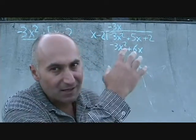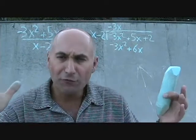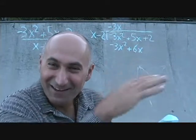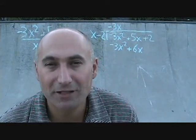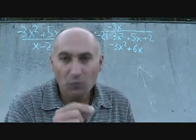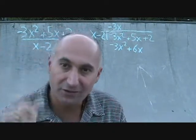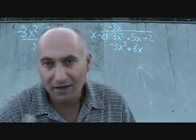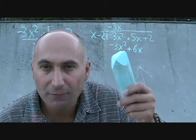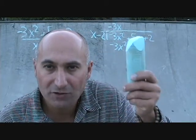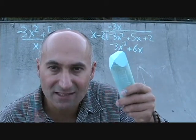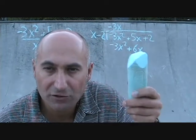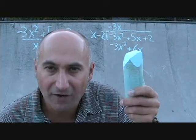For longer long division problems there are a lot of things to keep track of, and the last thing you want to worry about is a negative times a negative becoming a positive and then doing your addition. The simplest approach is to prefer adding over subtracting. If you're subtracting the bottom from the top, all it means is you're changing the signs of the bottom row and adding it to the top.